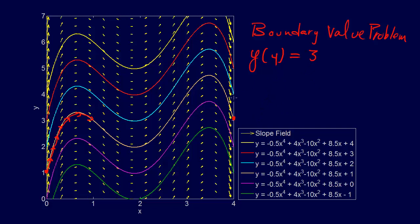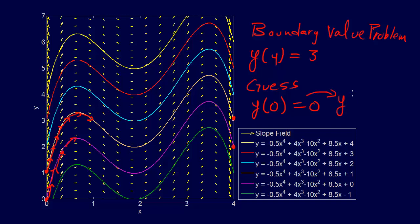y of 4 is equal to 3. Now, what do we do? This method is called the shooting method. What we do is we just guess what y of 0 is. Let's say y of 0 equals 0 as our initial guess. We do our regular method and follow along, coming up with something hopefully similar to the purple solution. What we find out is y of 4 equals not 3, but 2.